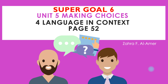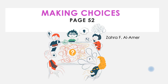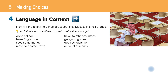Hello everybody. Super Goal 6, Unit 5: Making Choices. For language in context, page number 52. Let's take a look at the objectives: number one, answer and discuss the given questions; number two, listen to answer the given questions; number three, practice pronouncing common consonant clusters correctly; and number four, answer some questions about you. The title of this unit is Making Choices.